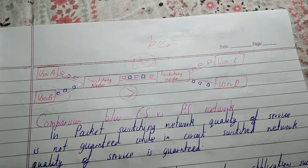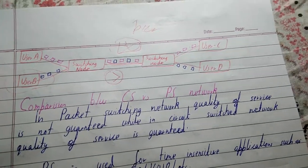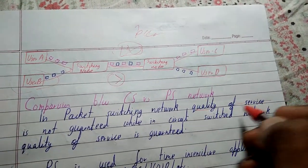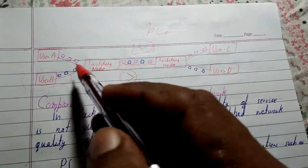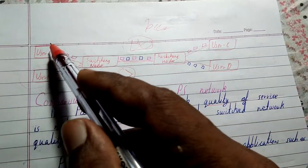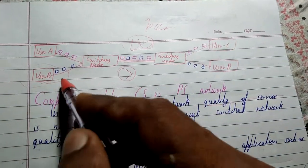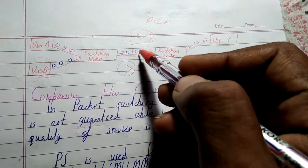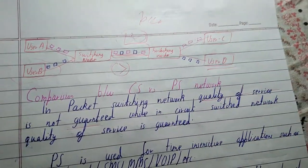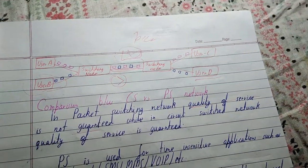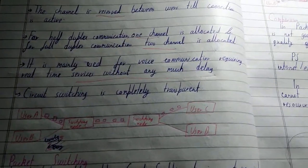Now let's compare circuit switching and packet switching. In packet switching, quality of service is not guaranteed, because if user A and user C are communicating and at the same time user B and user D also communicate and congestion happens, quality of service will degrade. But that is not the case in circuit switching, because the network is dedicated initially, so quality of service is maintained.